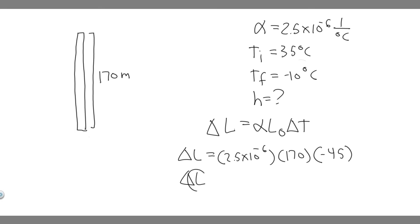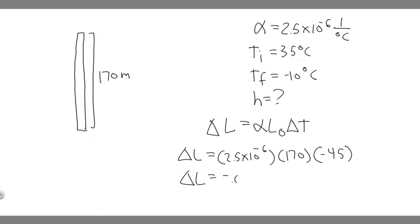What you want to do is multiply this out. Keep in mind this is degrees Celsius, this is meters, and alpha is inverse degrees Celsius, so the units cancel and you're just going to have meters — which is what we want. Plug into your calculator: 2.5 times 10 to the minus 6, multiplied by 170, multiplied by minus 45. You're going to get the change in length equals minus 0.19125 meters — a really small amount.